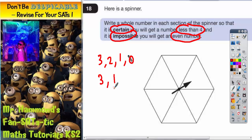Well, we can have three and we can have one. So basically this spinner, if we put threes and ones in it, that will be less than four and it'll be certain to be less than four, and it'll be impossible to get even because threes and ones will all be odd. So that will work.